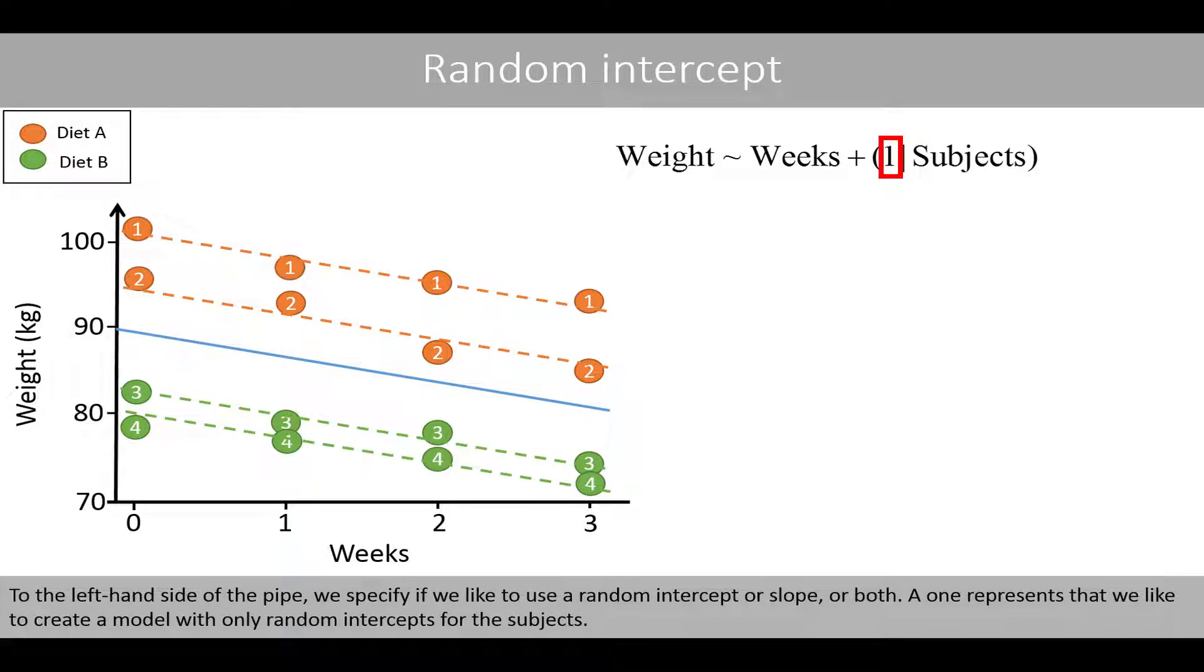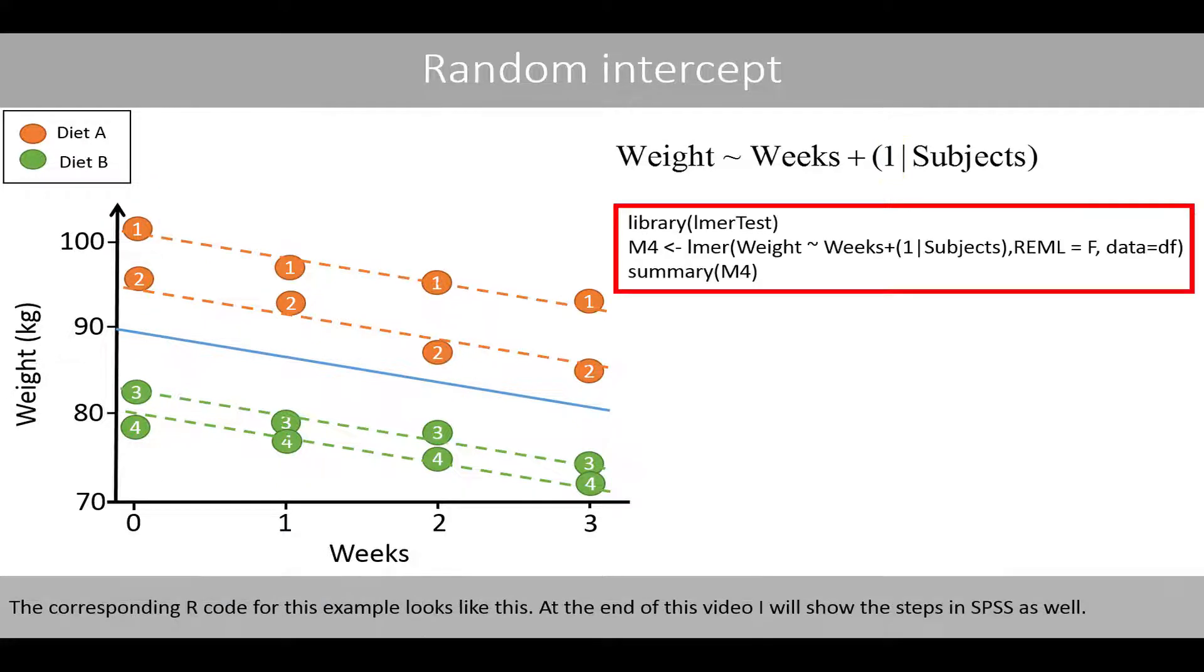To the left-hand side of the pipe, we specify if we like to use a random intercept or slope, or both. And one represents that we like to create them all with only random intercepts for the subjects. The corresponding R-code for this example looks like this. At the end of this video, I will show the steps in SPSS as well.